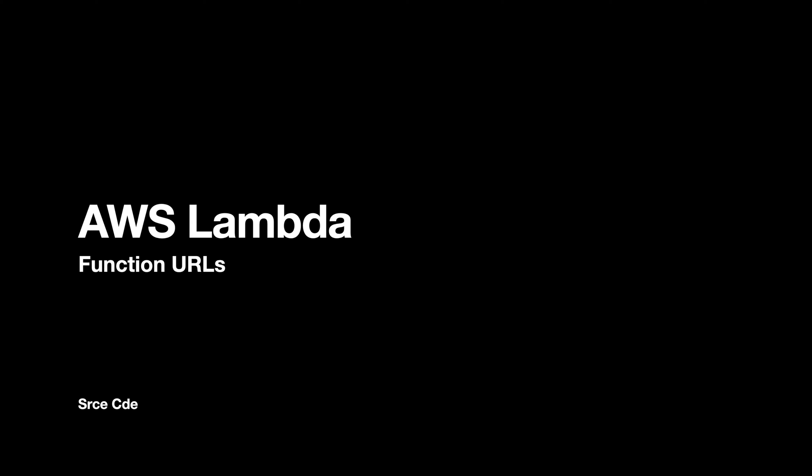With the addition of the function URL, one can easily configure an HTTPS endpoint in front of a Lambda function without having to additionally configure and operate services besides Lambda like API Gateway. So let's get started.